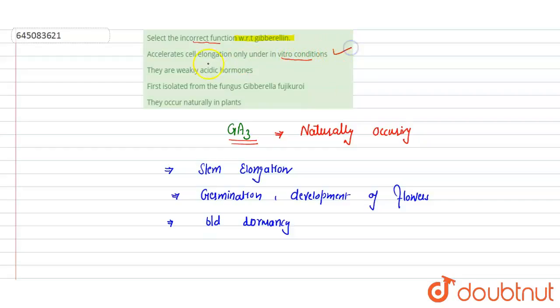Second is they are weakly acidic hormones. This is correct. If we see them chemically, these are acidic and that too weakly acidic. They come under the weak acids because these are gibberellic acid or gibberellin also known as gibberellic acid. So these are weakly acidic. This is correct statement but we have to choose incorrect, so wrong option.